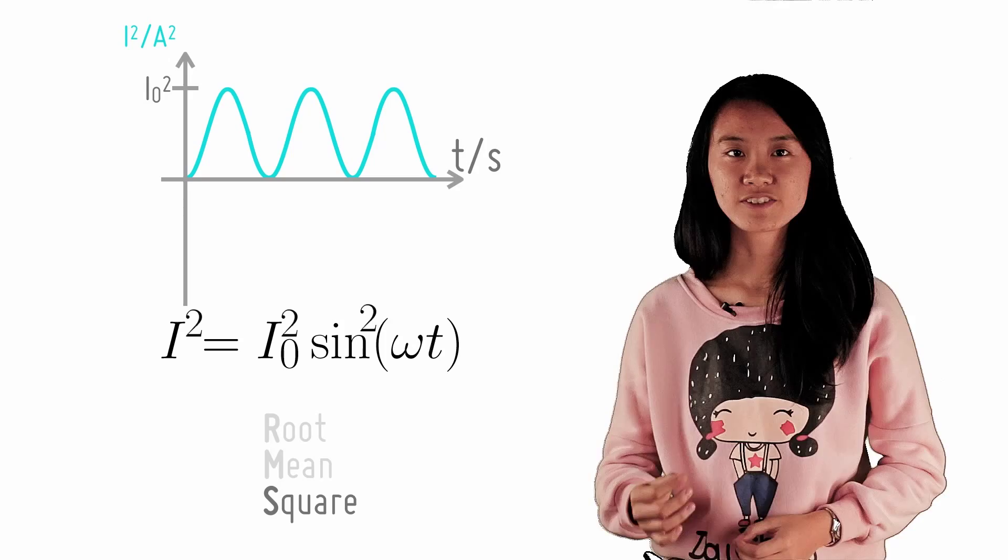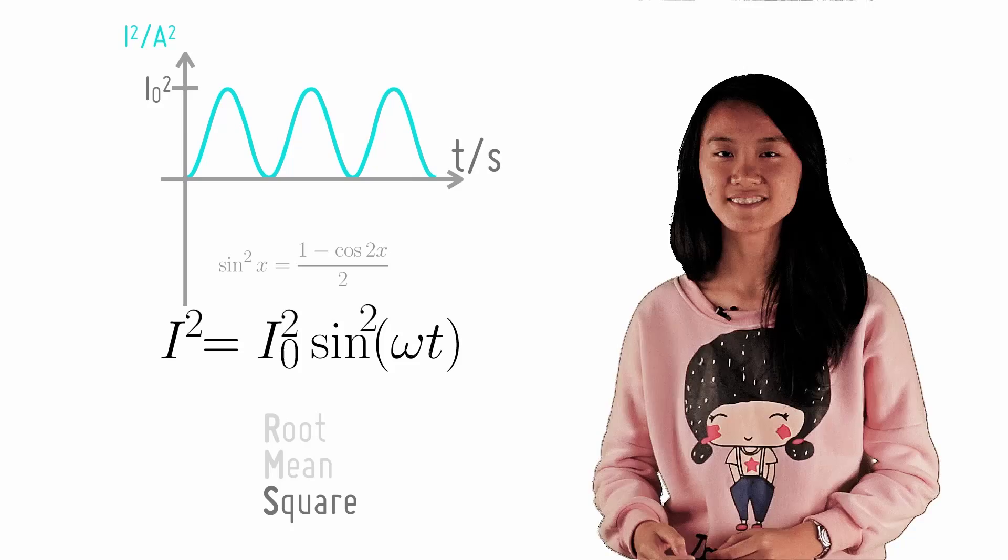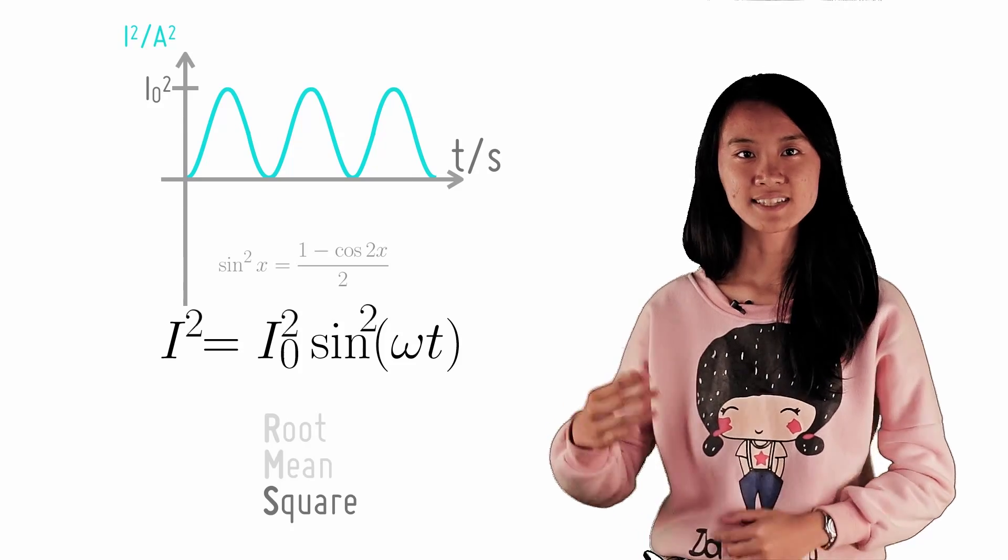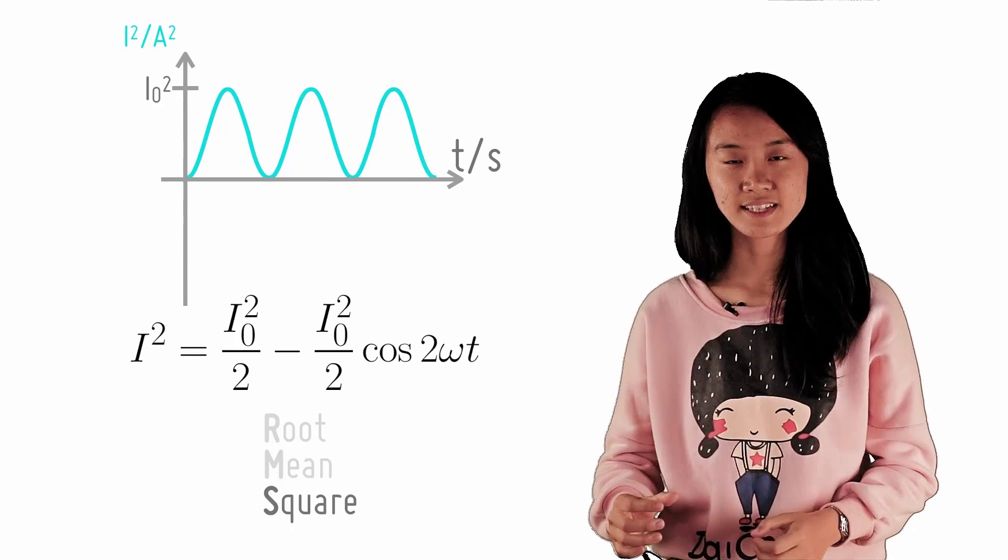If you remember your trigonometric identities, sin²(x) equals (1 - cos(2x))/2. So after substituting and simplifying, I² can indeed be written as a sinusoidal wave translated vertically.